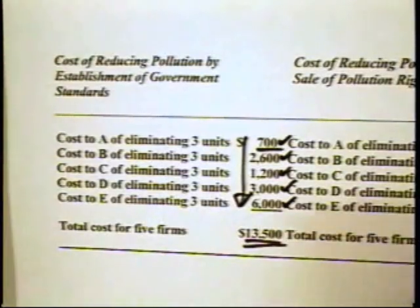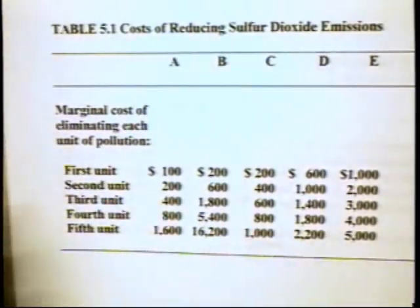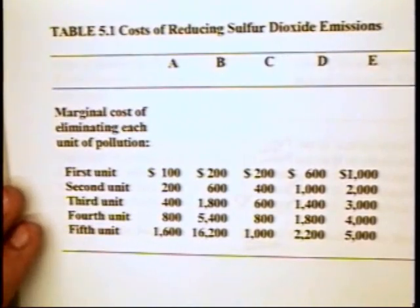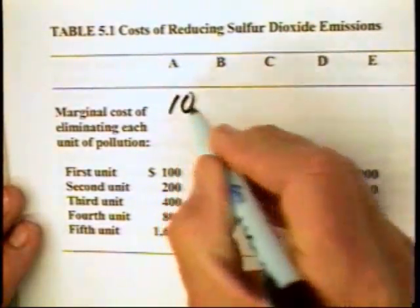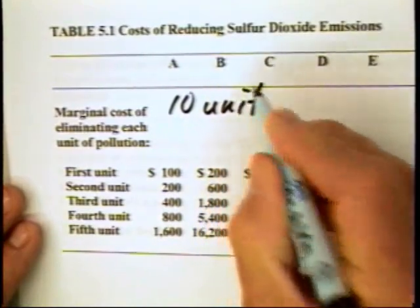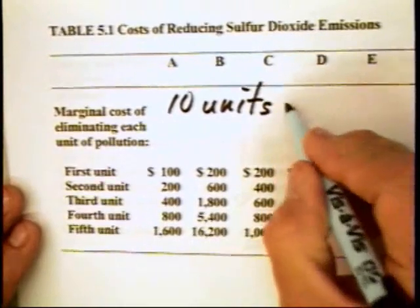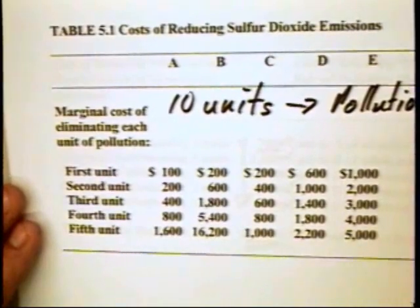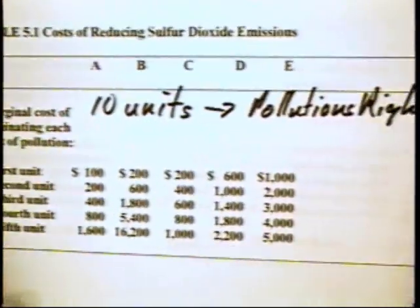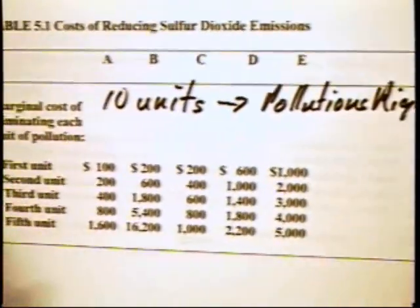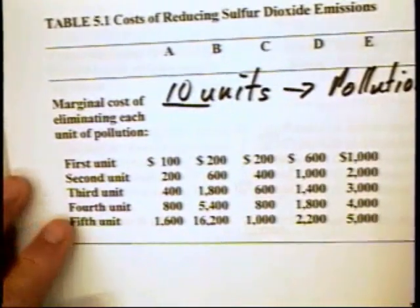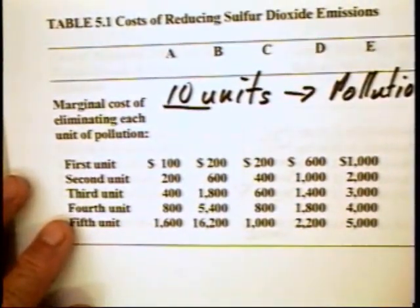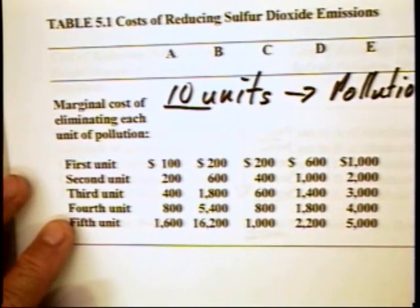We can compare the cost factor with the cost of pollution abatement when the government sells pollution rights. The government decides there are going to be 10 units of pollution in the atmosphere and creates pollution rights equal to this — 10 certificates or pollution rights that are going to be auctioned off. We should expect the price of these certificates to rise until the quantity demanded equals 10.